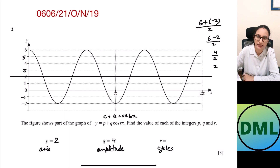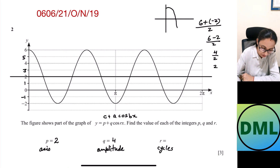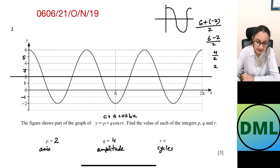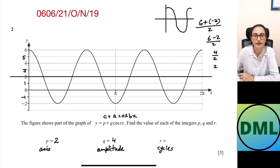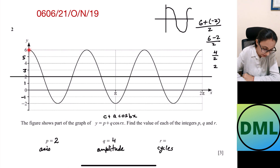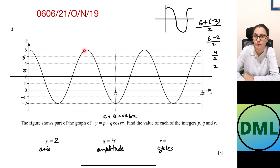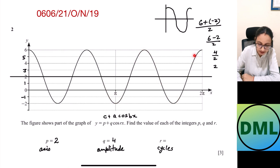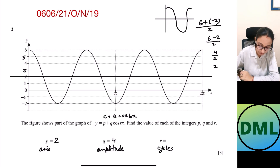Now I need to find out the number of cycles. Our basic cos function starts from 1, touches the axis, goes down, touches the axis again, and comes back to 1 — that is one cycle. This graph goes from 0 to 2π, so 2π is the period. Counting the cycles inside 2π: first cycle, second cycle, third cycle. That means within 2π radian I have 3 cycles, so the value for r is 3.